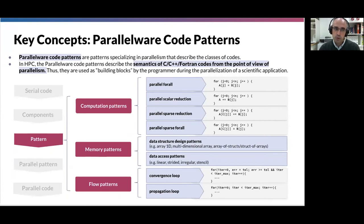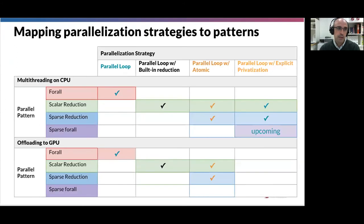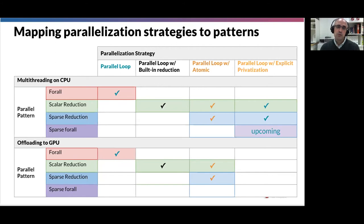As a reminder, the patterns include compute patterns, memory patterns, and flow patterns. During this course we will focus on two compute patterns — parallel sparse reduction and parallel sparse form — because they build upon contents of the training series and match very well the properties found in the CPIC use cases for the particle-in-cell method. A parallelization strategy is a different way of coding parallelism using OpenMP and OpenACC. For each pattern and platform — multithreading on CPU or offloading on GPU — different strategies are available, designed based on expertise in parallel programming.